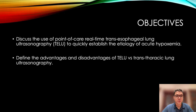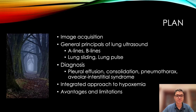Our objectives will be to discuss the use of point-of-care, real-time, transesophageal lung ultrasonography to quickly establish the etiology of acute hypoxemia, and to define the advantages and disadvantages of transesophageal lung ultrasound versus transthoracic lung ultrasonography. Together, we'll go through image acquisition and discuss the general principles of lung ultrasound, including A-lines, B-lines, lung sliding, and lung pulse.